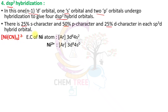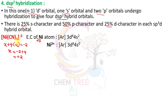An example is the coordination compound tetracyanonickelate, [Ni(CN)₄]²⁻. Nickel is the central atom with electronic configuration [Ar] 3d⁸ 4s⁰ (atomic number 28). To find the oxidation state: x + 4(−1) = −2, so x = +2. Nickel exists in the +2 oxidation state, and in Ni²⁺ it loses 2 electrons giving electronic configuration [Ar] 3d⁸.